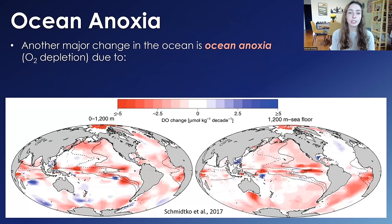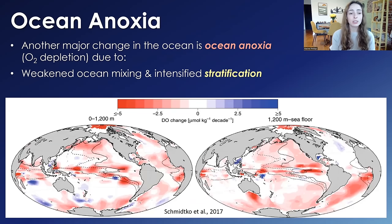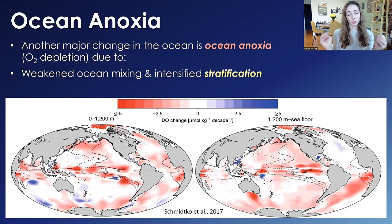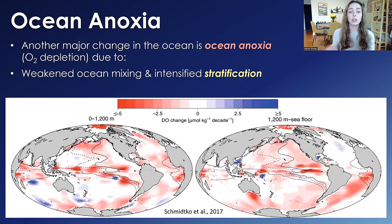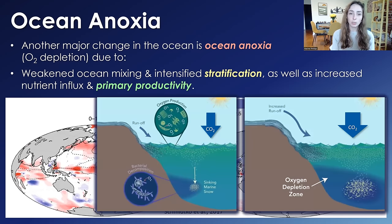Another major change occurring in the oceans is ocean anoxia — oxygen decrease or depletion — due to two things. First, the weakened ocean mixing and upwelling we discussed intensifies stratification and stagnation of ocean layers. That vertical mixing is what actually delivers oxygen to the deep oceans, and without it, deep oceans become anoxic. We've seen this in Earth's history when temperature gradients weakened from equator to poles, such as during certain ocean anoxic events in the Cretaceous or Jurassic, and it can be really detrimental to marine life.